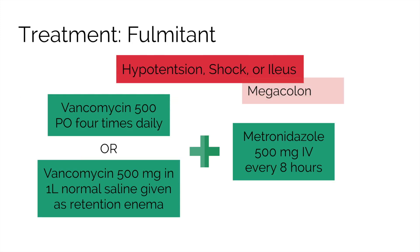Fulminant episodes are when the infection becomes out of control and the person develops hypotension, shock, or an ileus. An ileus is when bowel peristalsis stops in a section leading to an obstruction, often related to electrolyte imbalance like hypokalemia, which commonly occurs with severe diarrhea. In addition, there is a phenomenon called megacolon, where the entire colon severely dilates, leading to pain, decreased bowel sounds, and an acute abdomen. Abdominal examination is critical in these cases.